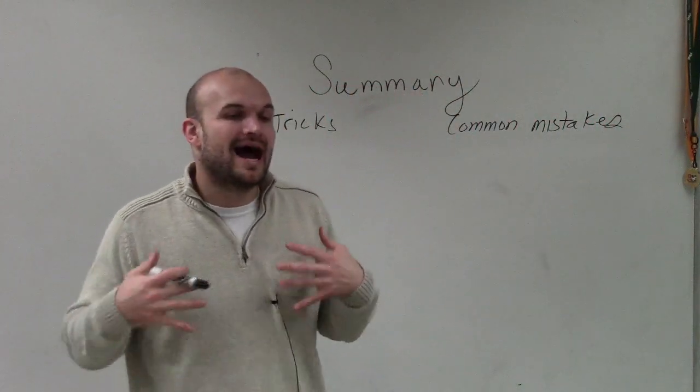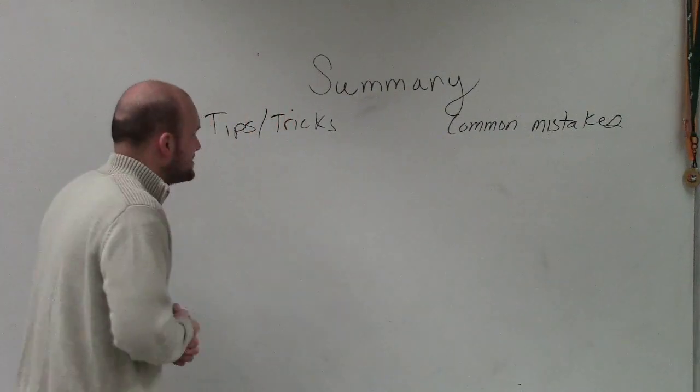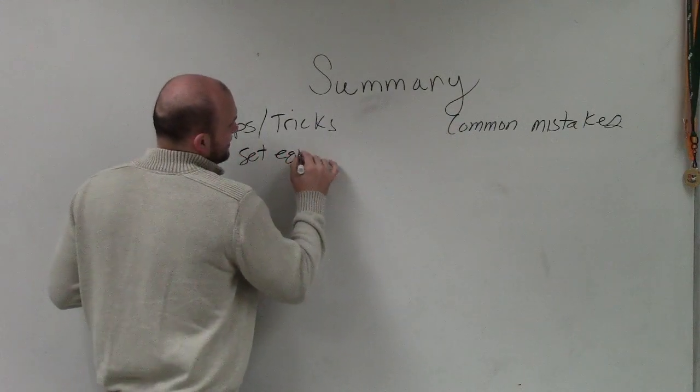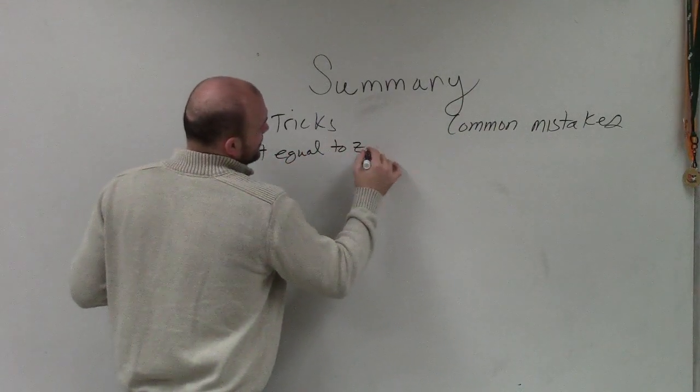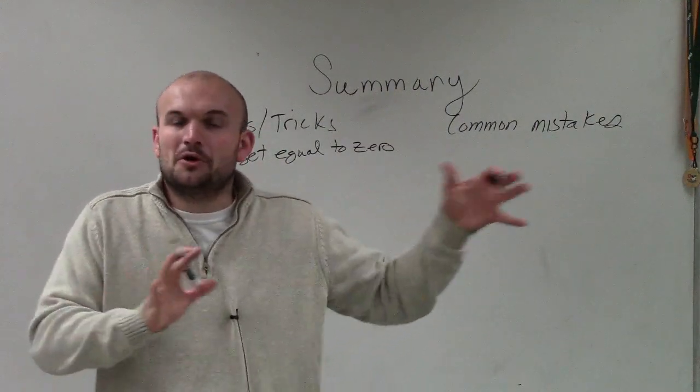Now, this is the one that I prefer. It's not necessary like it is with factoring, but one of the tips or tricks that I like to do in Completing the Square is to set equal to 0. So set everything equal to 0, and then you can go ahead and complete the square.